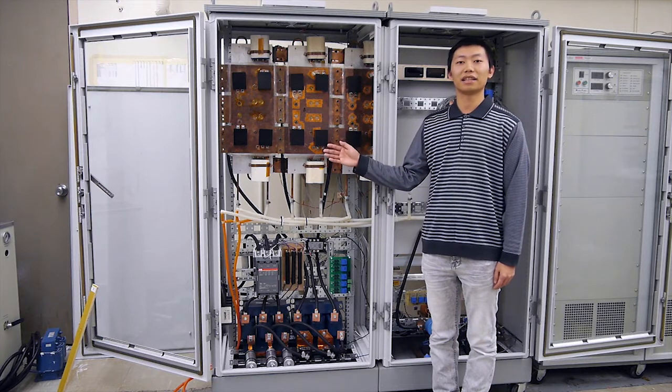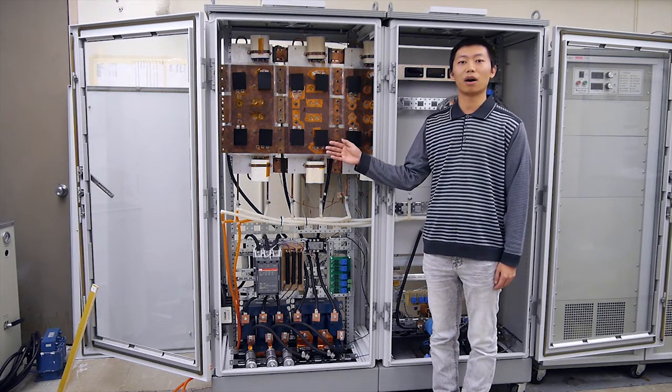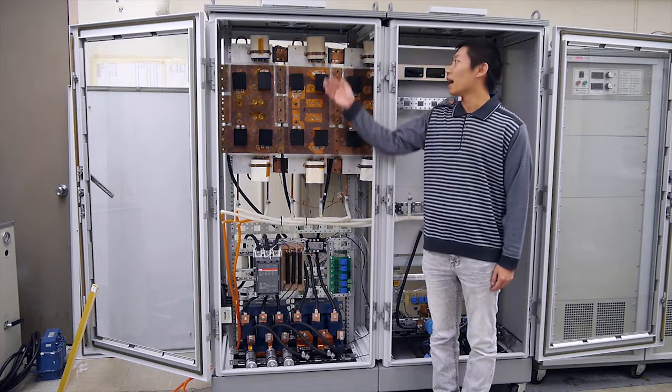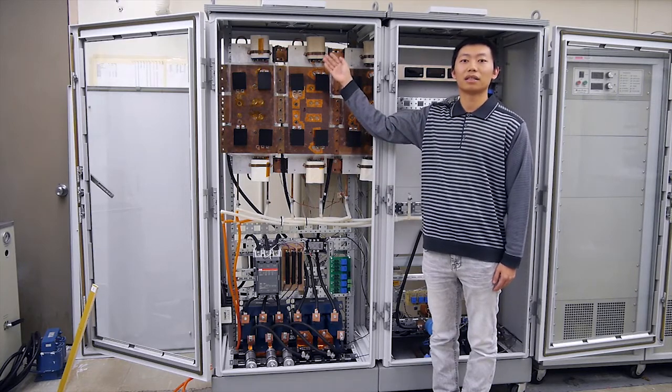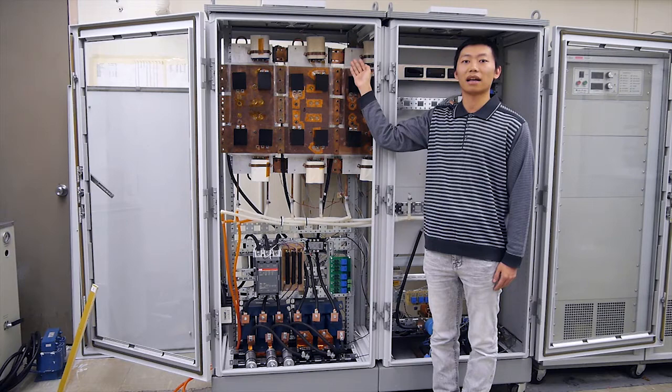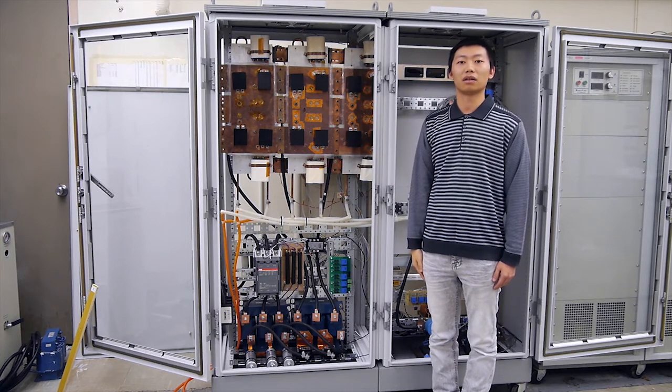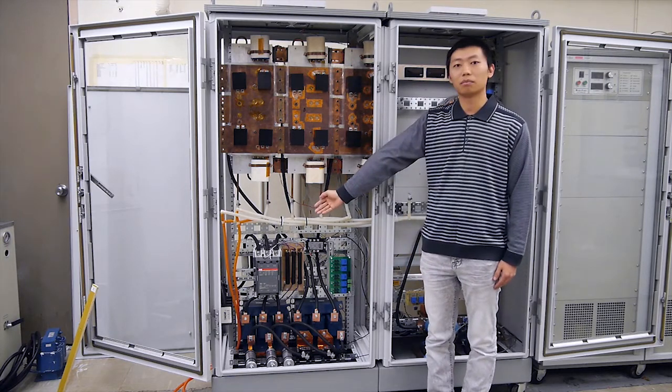This is the DC-AC part of the 3-phase 3-level power conversion system. At the top of the cabinet, you can see three of the phase lag building blocks connected together as the power stage of the converter.